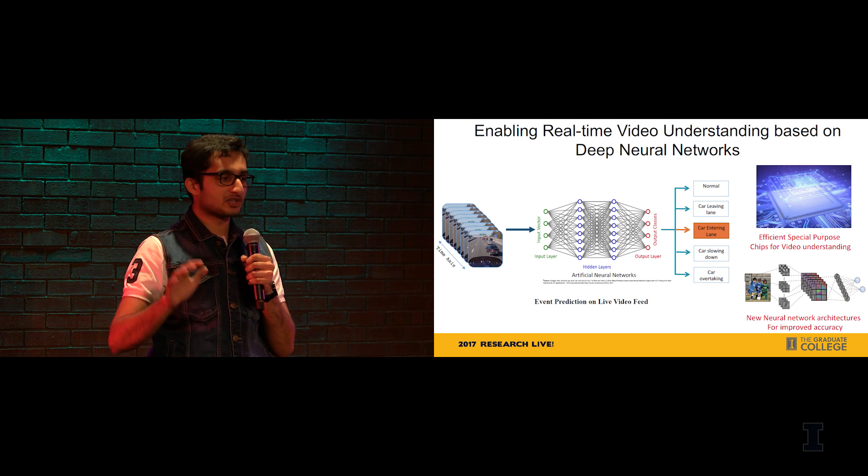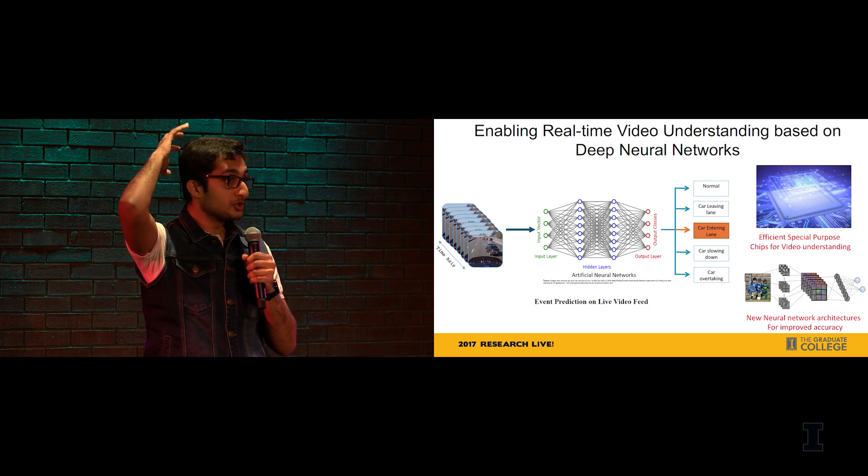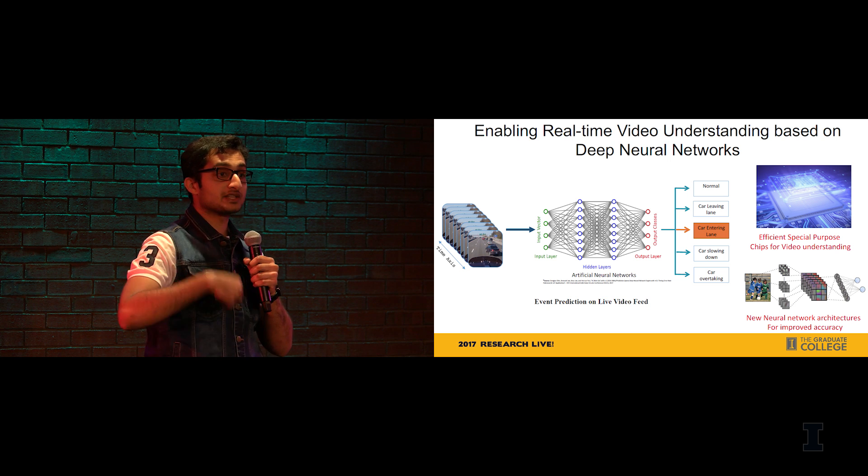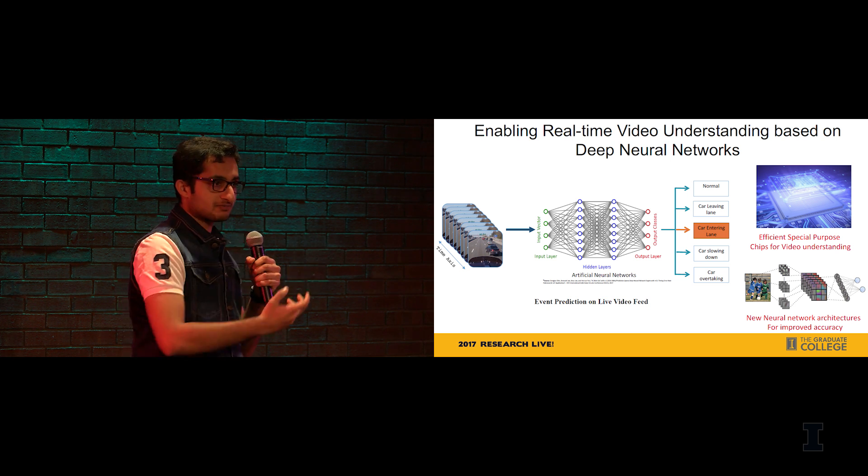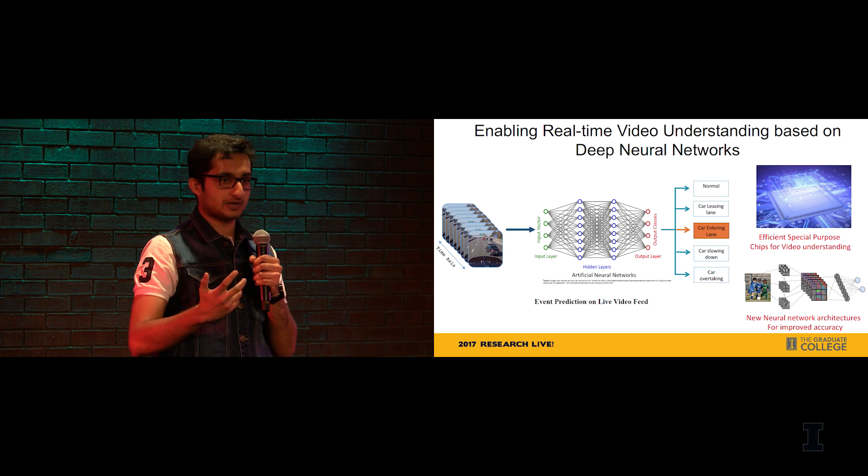Behind all this impressive AI technology are deep neural networks, which are designed based on how the human brain works. Our brain is made up of billions of neurons which are in a continuous process of learning. Scientists modeled these neurons mathematically and connected them like this to form an artificial neural network.